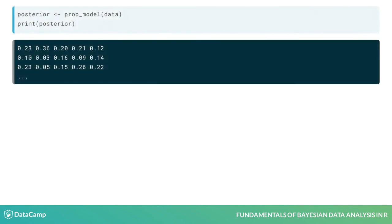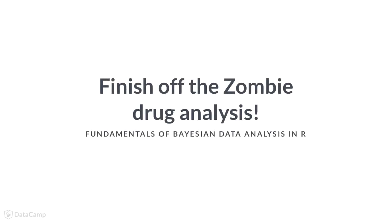Now, it's actually the case that the prop model function also returns a large random sample from the posterior distribution. So, finish off the zombie drug analysis...